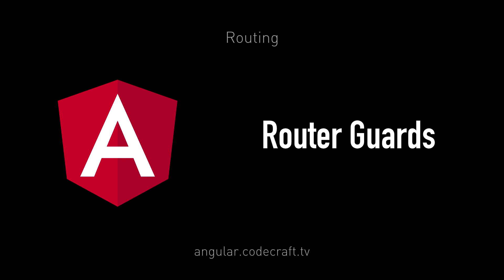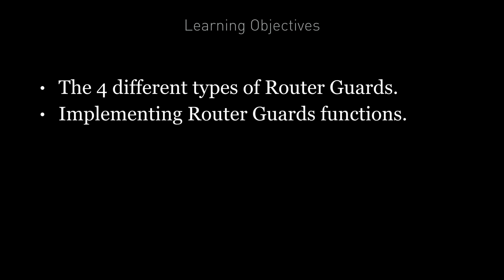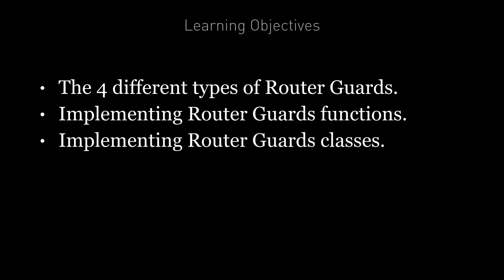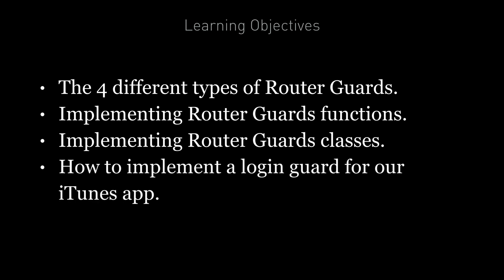With router guards, we can prevent users from accessing areas they're not allowed to access, or we can ask them for confirmation when leaving a certain area. By the end of this lecture, you're going to know the four different types of router guards, how to implement them as functions, and how to implement them as classes. We're going to go through a specific example for implementing a login guard for our iTunes app.